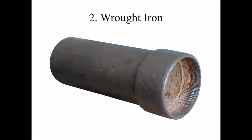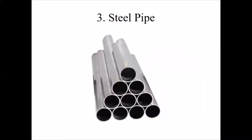Wrought iron pipe has nearly the same properties as cast iron pipe. Wrought iron pipes can be easily cut and threaded but are costly and not very durable. These pipes are affected by corrosion and are generally used inside buildings. They may be recommended for main pipelines if galvanized with zinc.